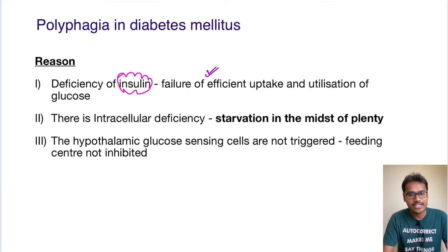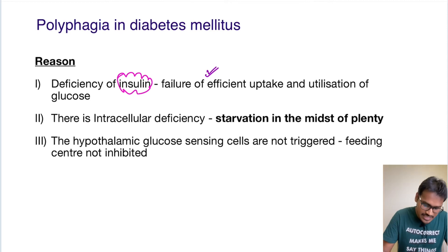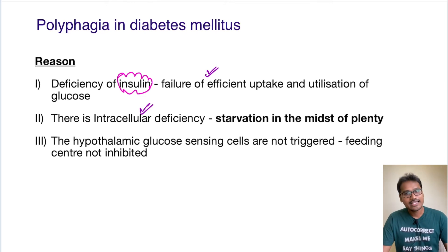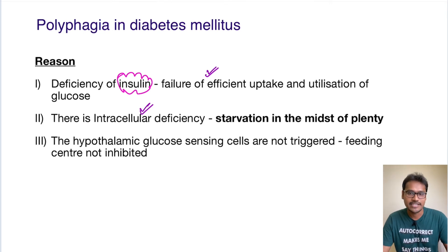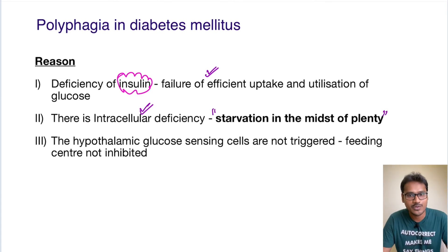The glucose that is available is not being utilized. There is a huge amount of glucose in the plasma, but inside the cell there is intracellular deficiency of glucose, because insulin is not able to put the glucose inside the cells. This is classically called starvation in the midst of plenty — there is huge availability of glucose but it is not entering the cells.